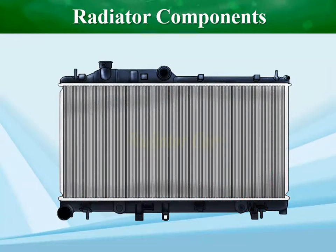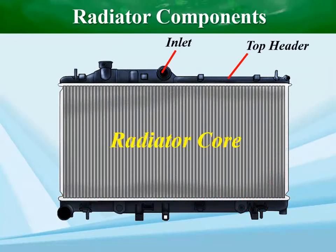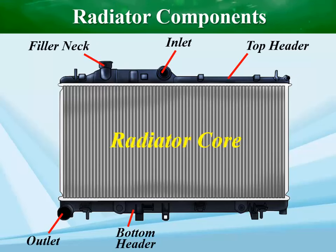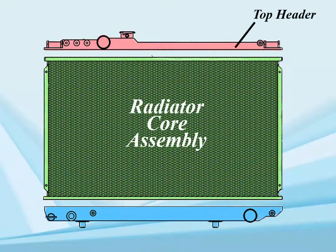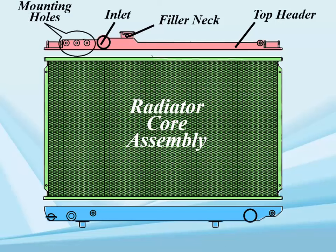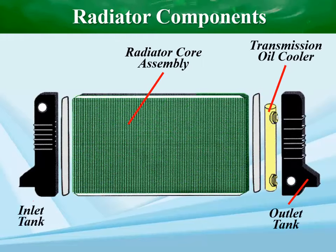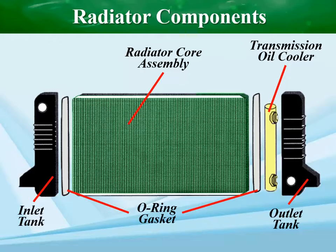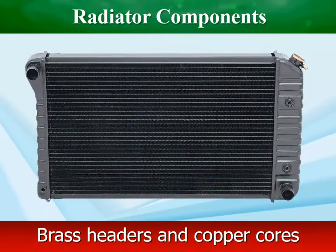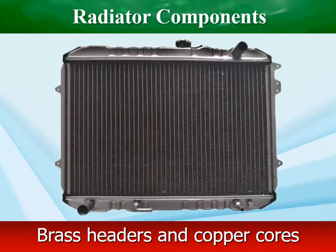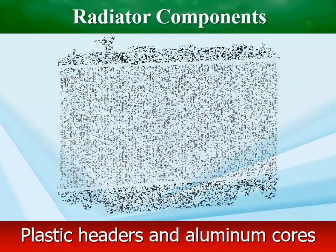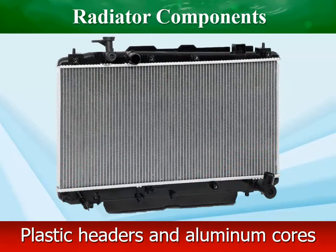A radiator has two main components: the core and the headers. A radiator is made of brass and copper to facilitate cooling and to protect it from rust and corrosion. All joints are soldered. Aluminum and plastic are also used in radiator construction to reduce the unit's weight.